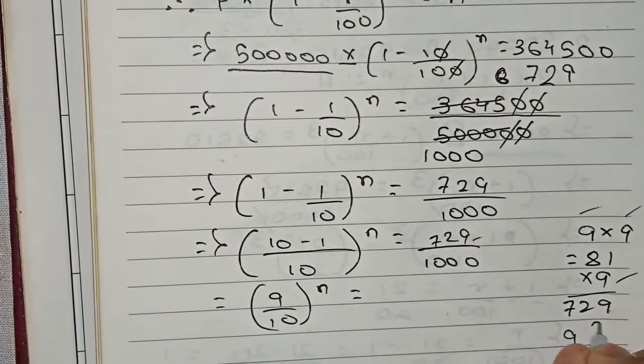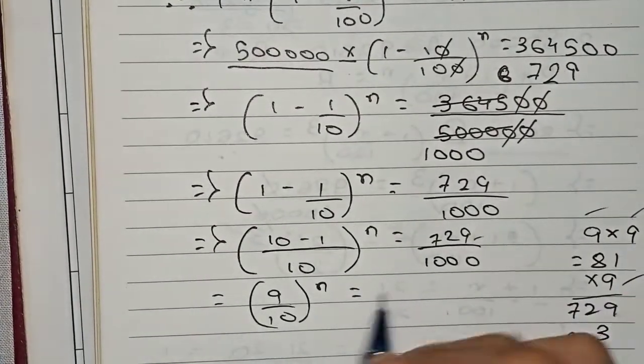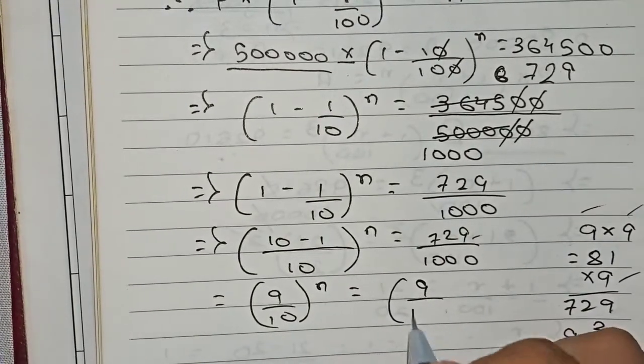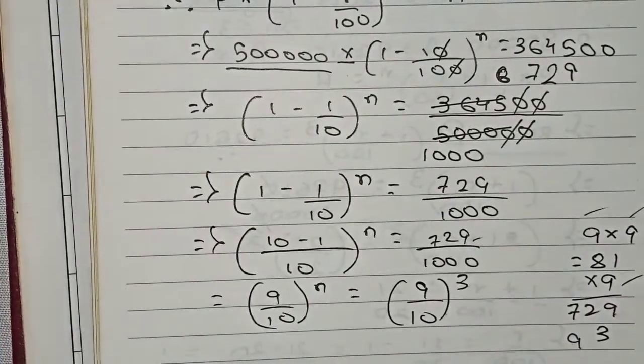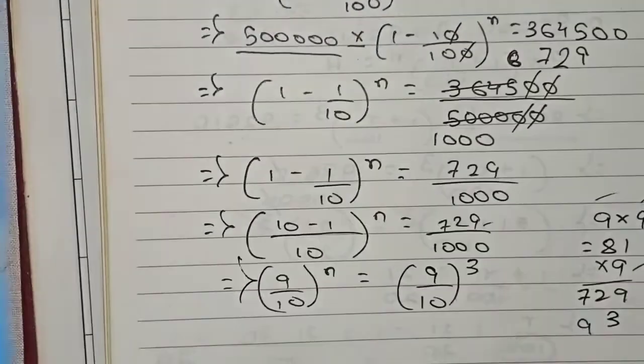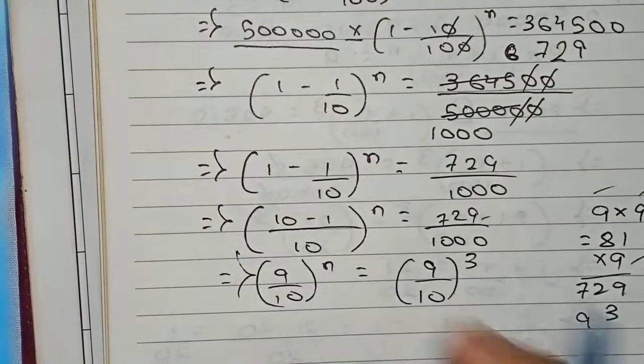So 9 to the power 3 divided by 10 to the power 3 equals 729 by 1000. This can be written as (9/10) to the power n equals (9/10) to the power 3.